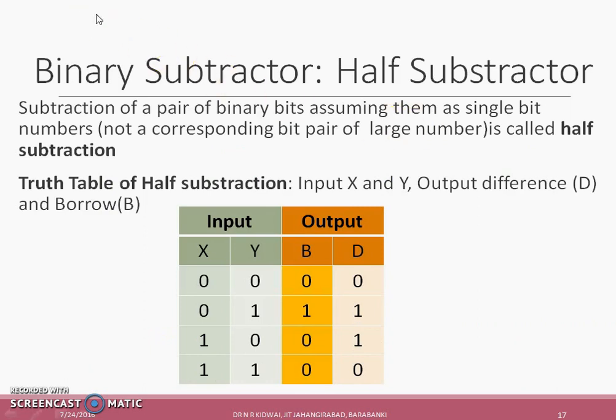Thus half subtraction can be explained as subtraction of a pair of binary bits, assuming them as a single bit number, not a corresponding bit pair of large number. Based on this description, truth table of half subtraction can be formed with the inputs X and Y and the difference D and borrow B.